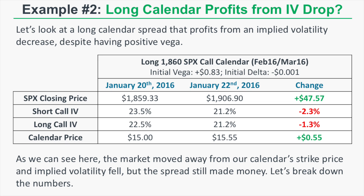On January 20th, 2016, SPX closed at 1859.33. The short call's implied volatility was 23.5%, the long call's was 22.5%, and the calendar spread was trading for a net debit of $15. On January 22nd, 2016, the market closed at 1906.90 — a $47.57 gain. The short call's implied volatility fell to 21.2%, a 2.3% decrease, and the long call's implied volatility also fell to 21.2%, a 1.3% decrease. The calendar spread's price increased by $0.55.